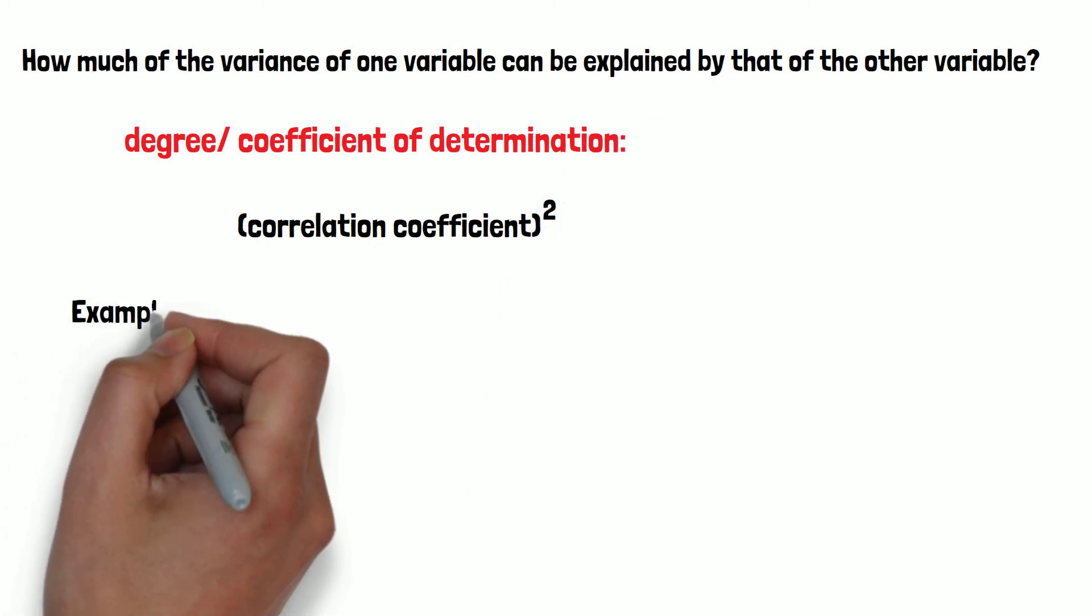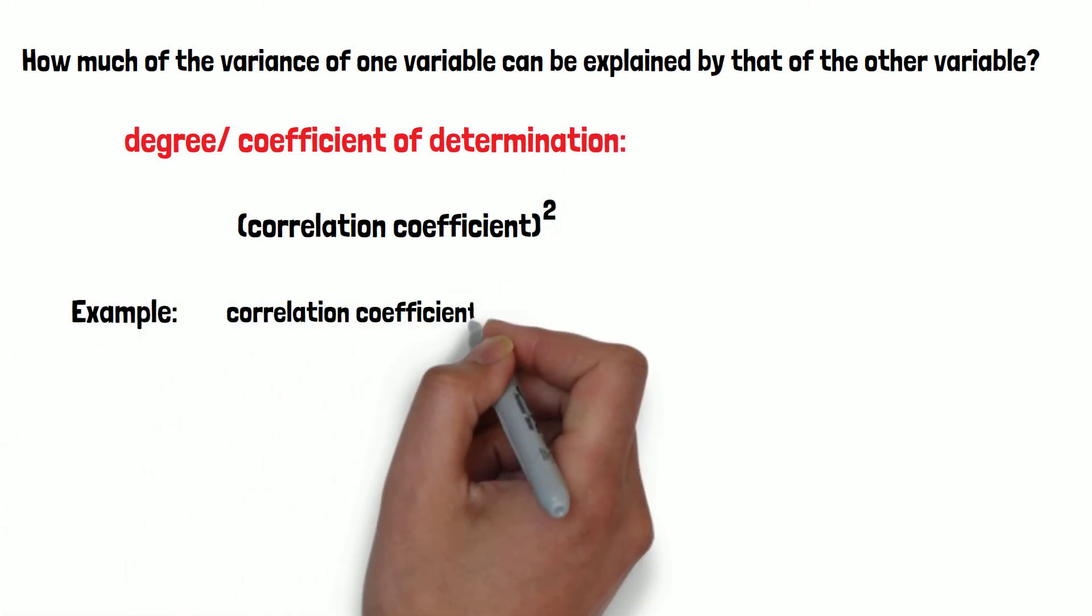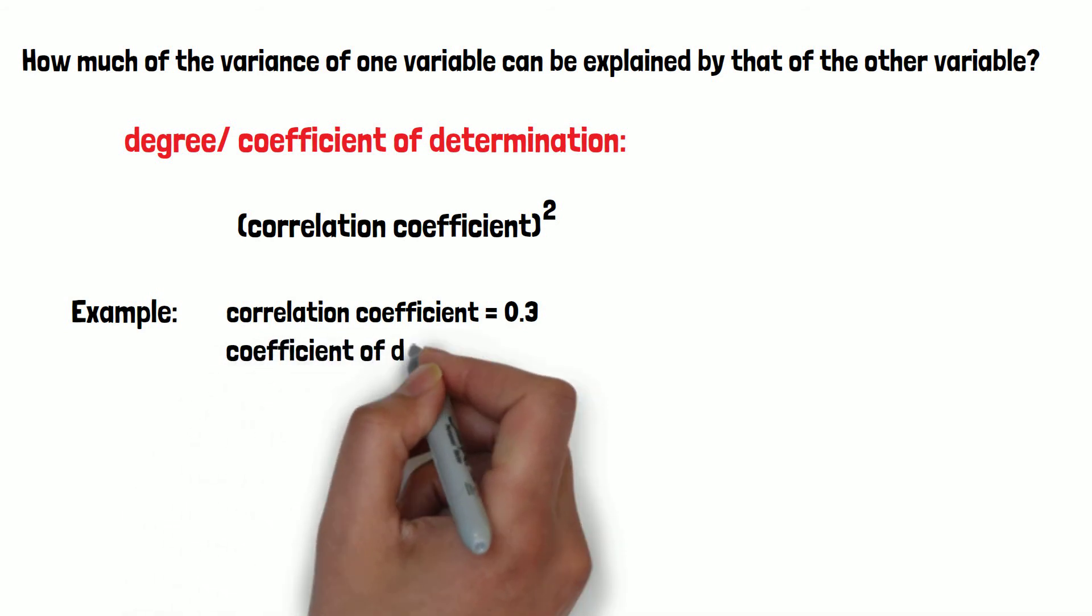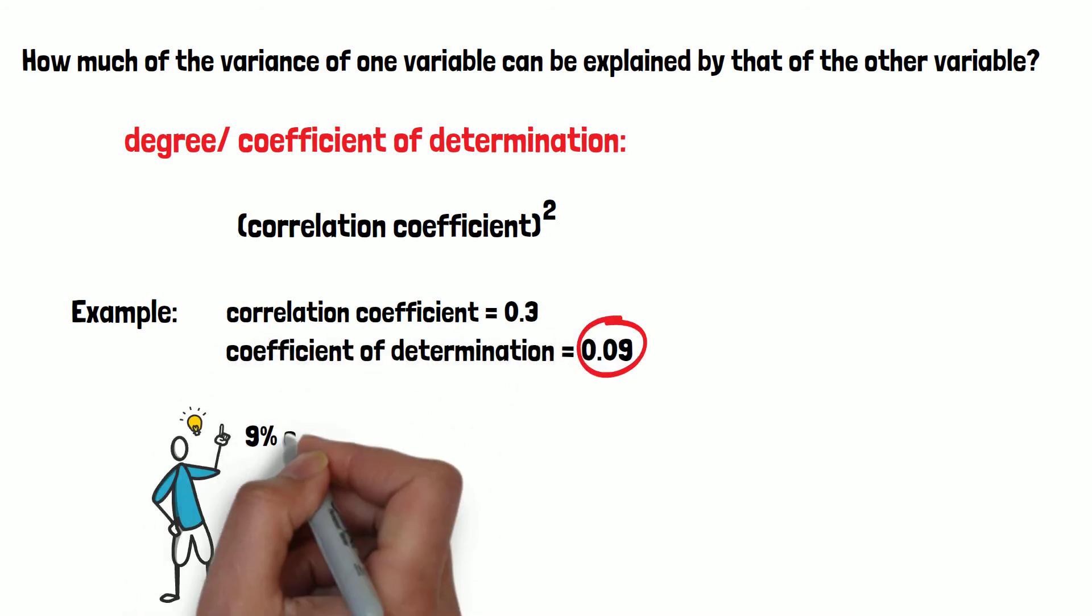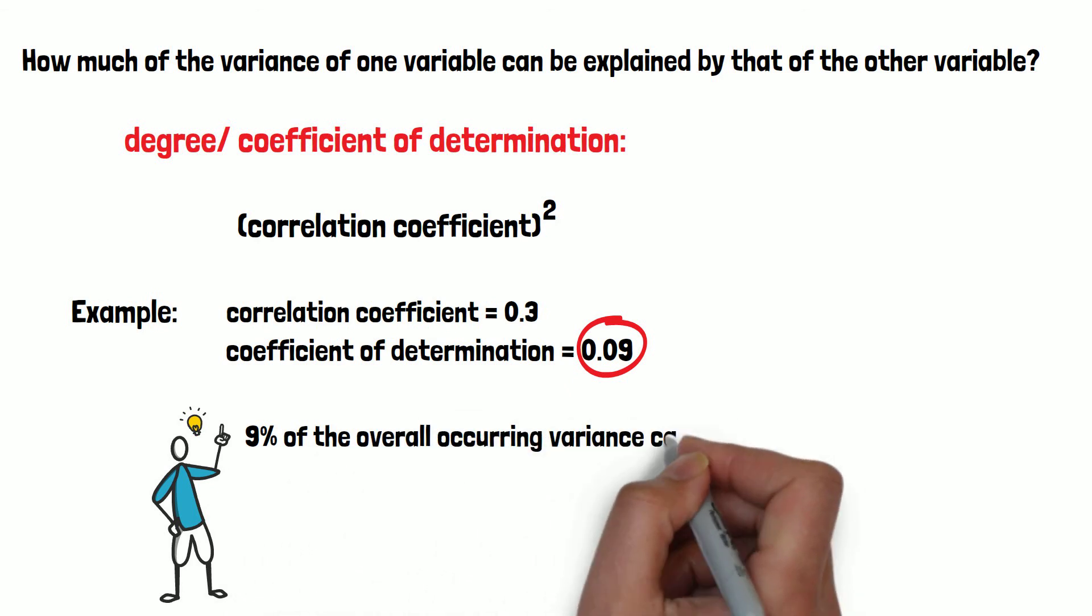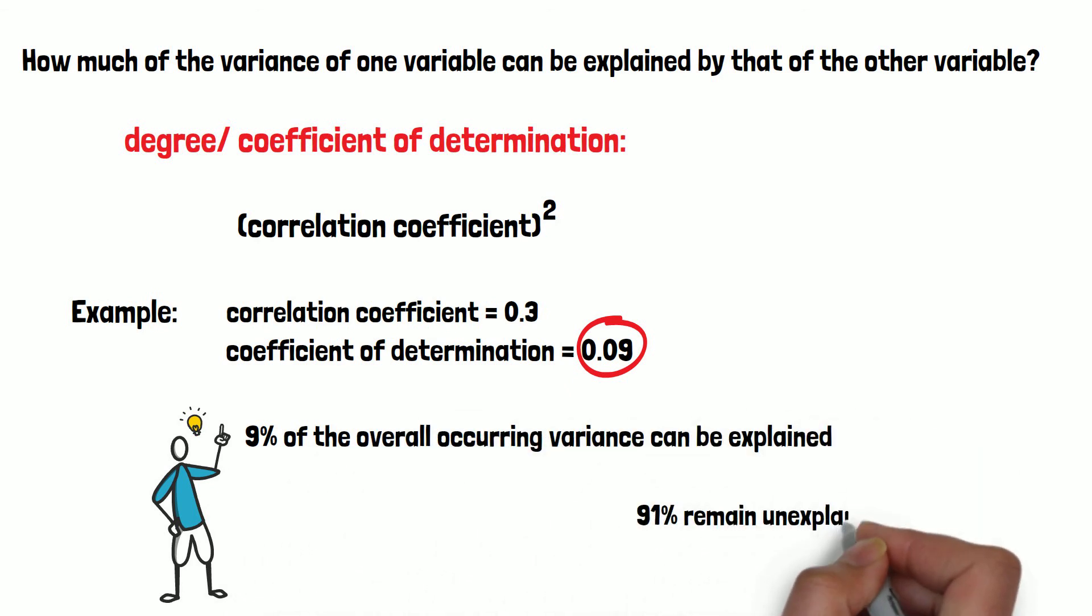For example, we have a correlation coefficient of 0.3, that means that 0.3 squared equals 0.09, so 9% of the overall occurring variance can be explained from the statistical perspective, and the other 91% remain unexplained.